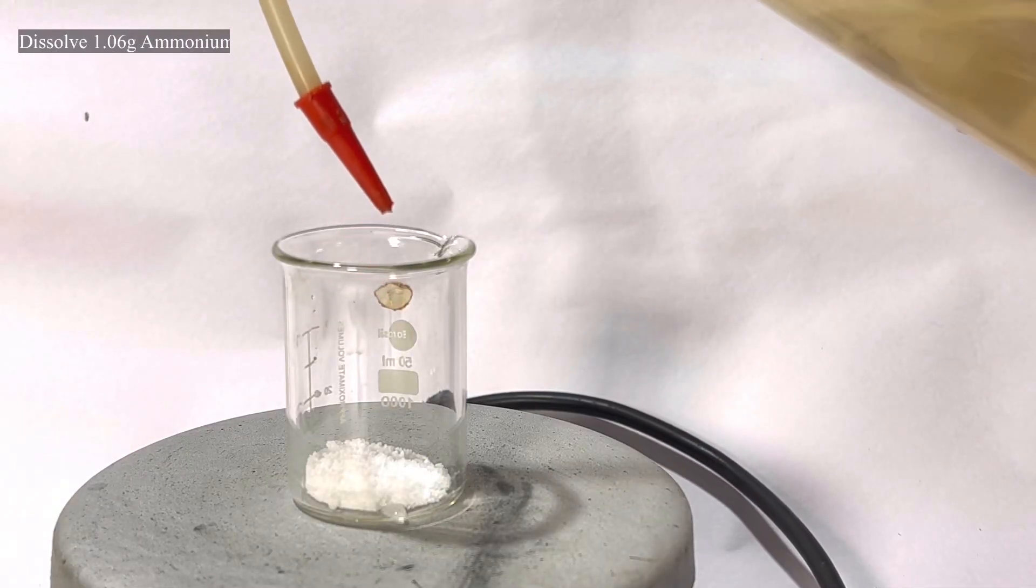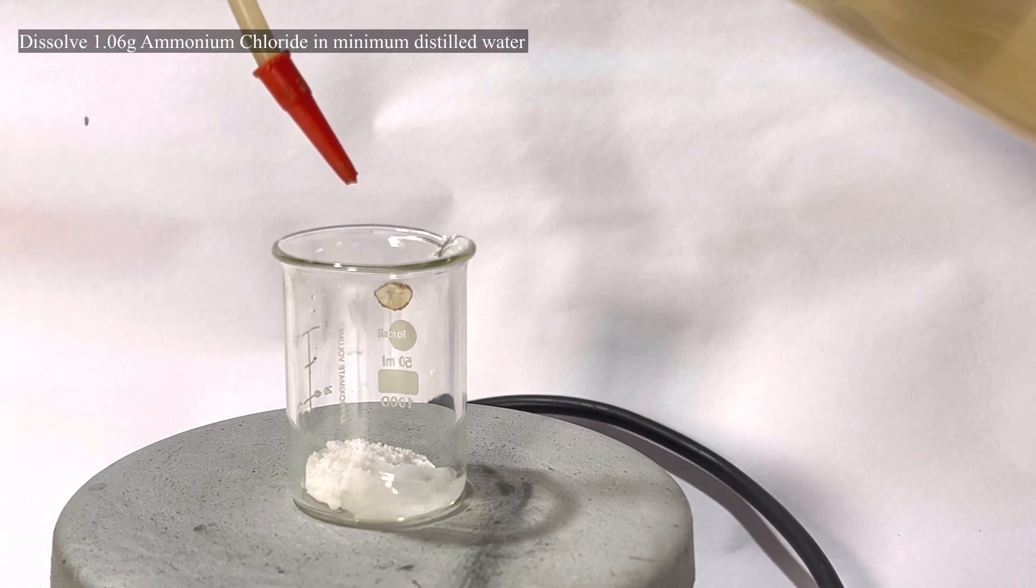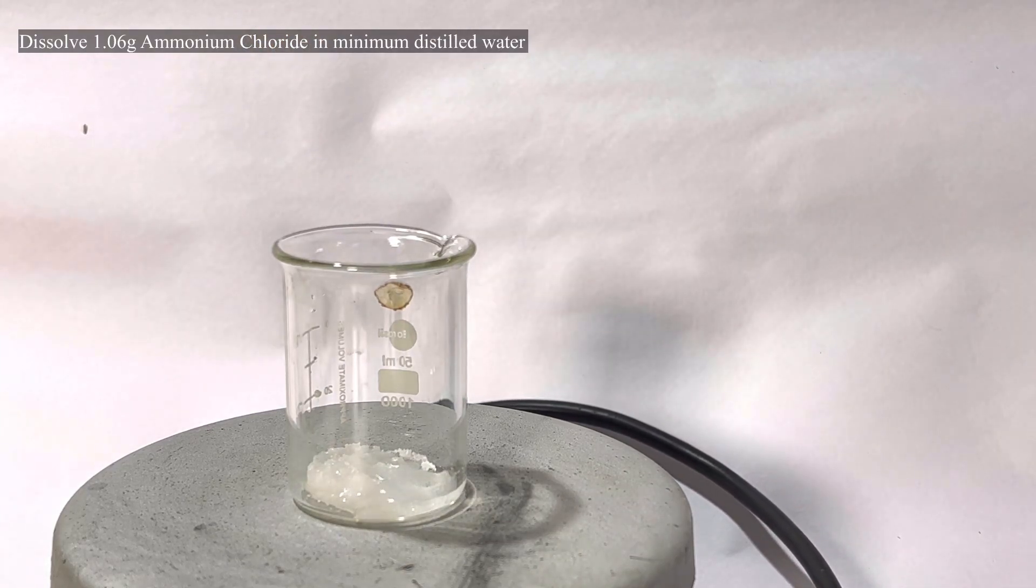Now prepare a solution of 1.06 grams of ammonium chloride in very minimal amount of water.